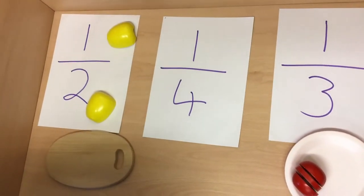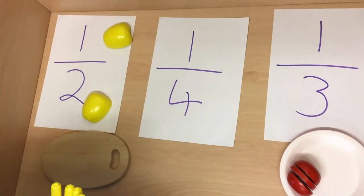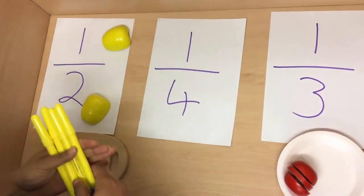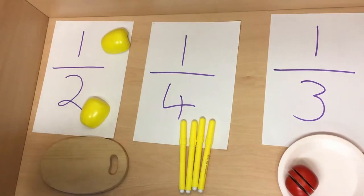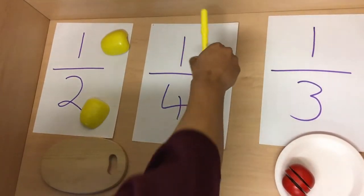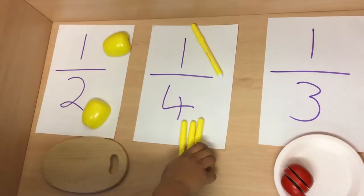I now want to show you what a quarter looks like. A quarter means I have four parts in total. I have four yellow fowl tips. One quarter of those would mean I take one out of the four. One quarter.